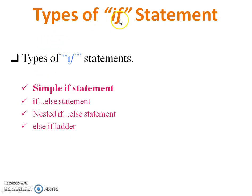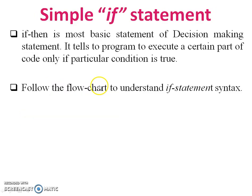There are four types of if statements: simple if statement, if-else statement, nested if-else statement, and else-if ladder. Today in this video we will see the simple if statement. The simple if statement is the most basic decision-making statement — it tells the program to execute a certain part of code only if a particular condition is true.